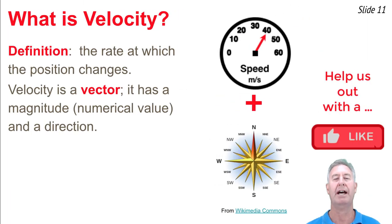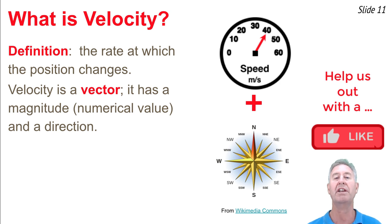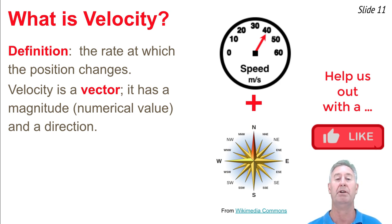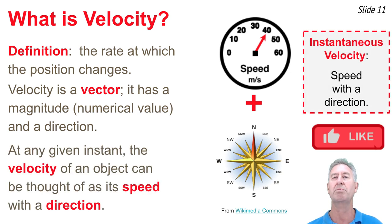Now we come to the topic of velocity. What is velocity? Starting with the textbook definition: it's the rate at which position changes. Velocity is a vector quantity — it has both a magnitude and a direction. In any given instant in time, the magnitude is simply the speedometer reading, and the direction is the compass reading. So velocity is speed with direction at any given instant in time.